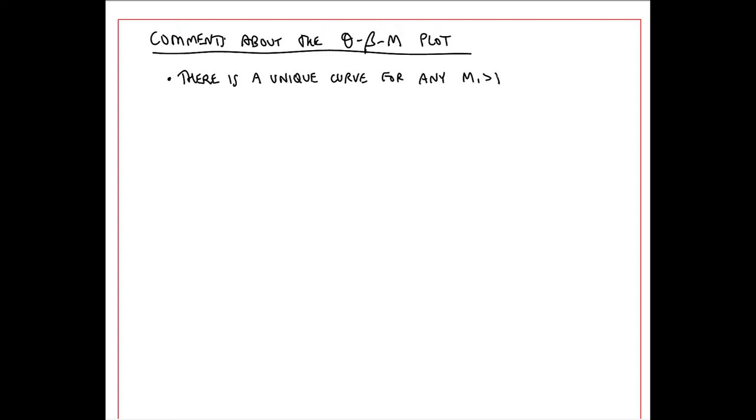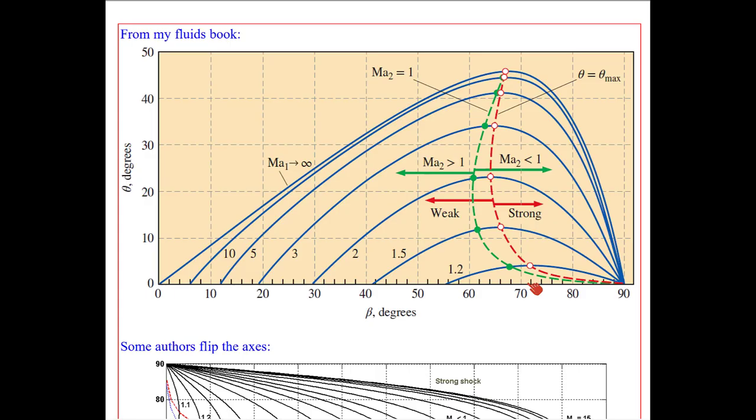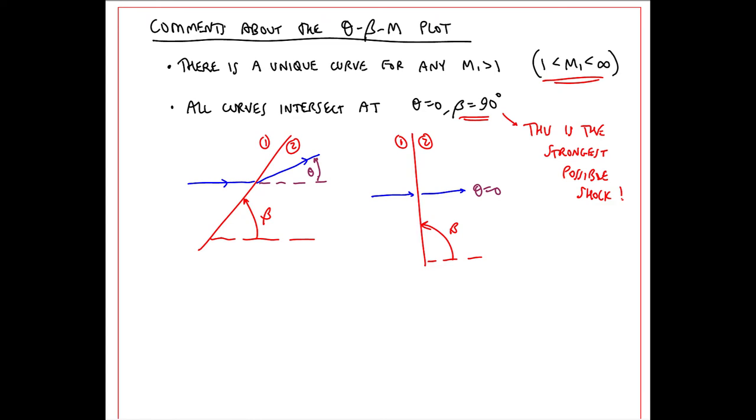Now I'll make some comments about the theta beta M plot. First, there is a unique curve for any M1 greater than 1, where you can't have a shock unless M1 is between 1 and infinity. All of these curves intersect at theta equals 0 and beta equal 90 degrees. For a typical oblique shock, beta is the shock angle and theta is the turning angle. When beta equal 90 degrees, you see that theta equals 0, because this is a normal shock. And for any Mach number between 1 and infinity, we can have a normal shock. That's why all the curves intersect at theta equals 0 and beta equal 90.